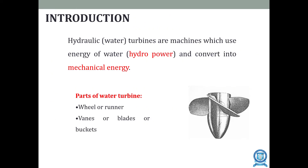A turbine is a device used for converting hydropower into mechanical energy — that is, hydraulic energy is being converted into mechanical energy. The general parts of a water turbine include a wheel or runner, and the vanes, blades, or buckets.